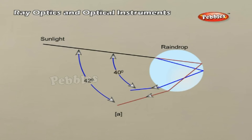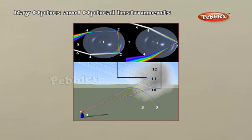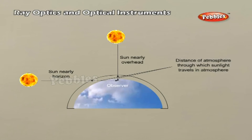Next, these component rays strike the inner surface of the water drop and get internally reflected if the angle between the refracted ray and the normal to the drop surface is greater than the critical angle, that is, 48 degrees in this case. The reflected light is refracted again as it comes out of the drop. It is found that violet light emerges at an angle of 40 degrees relative to the incoming sunlight and red light emerges at an angle of 42 degrees. For other colors, angles lie in between these two values. Figure B explains the formation of a primary rainbow. We see the red from drop 1 and violet from drop 2 reach the observer's eyes. When light rays undergo two internal reflections inside a raindrop instead of one, a secondary rainbow is formed.